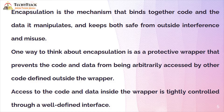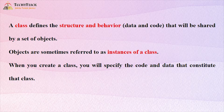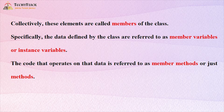Access to the code and data inside the wrapper is tightly controlled through a well-defined interface. A class defines the structure and behavior that will be shared by a set of objects. Objects are sometimes referred to as instances of a class. When you create a class, you specify the code and data that constitute it — collectively, these elements are called members of the class. The data defined by the class are referred to as member variables or instance variables.